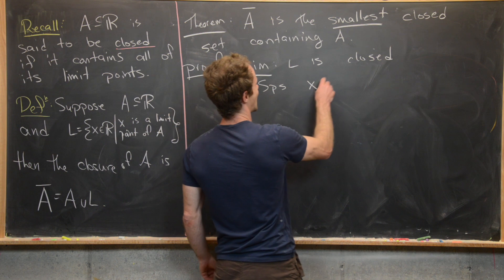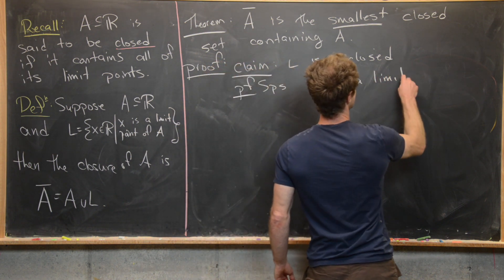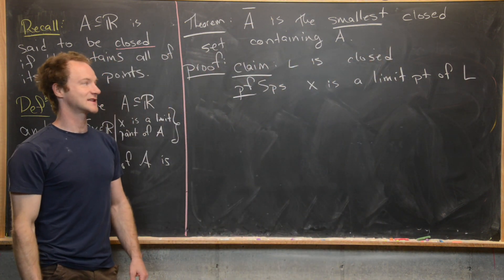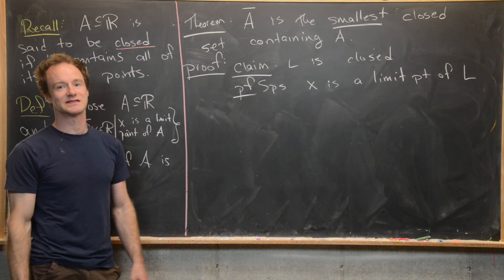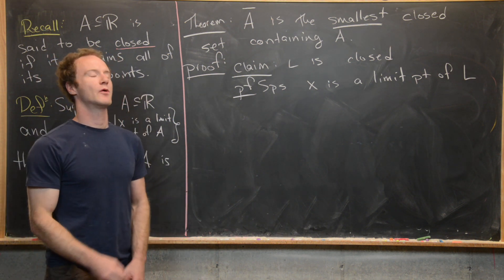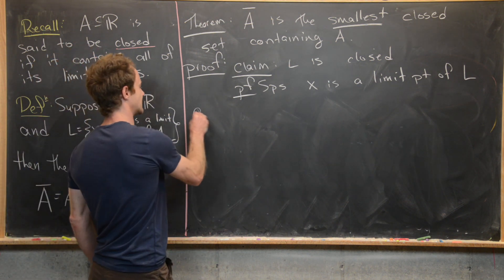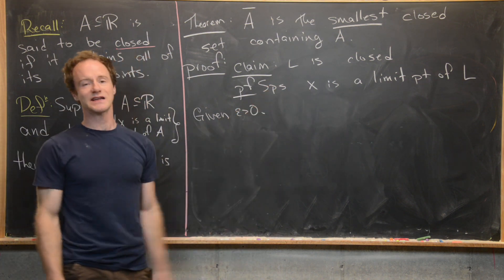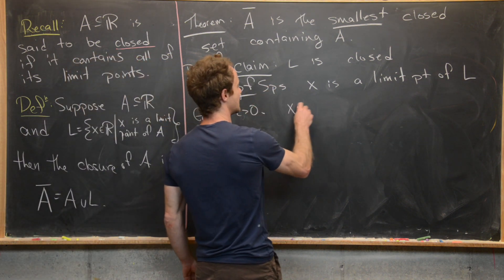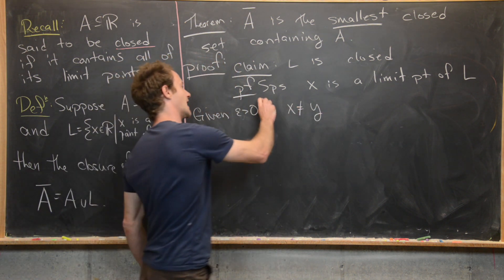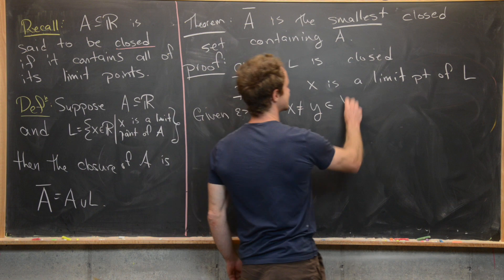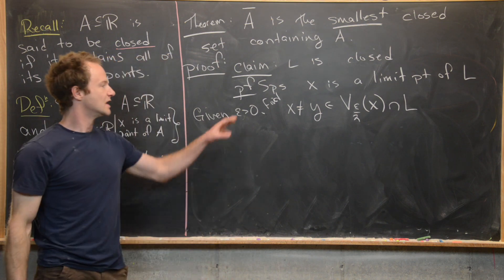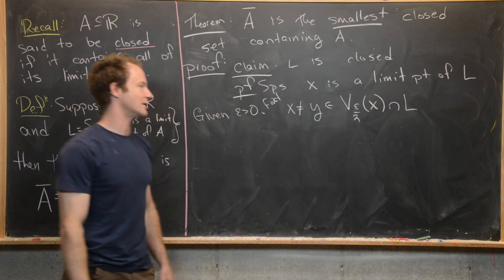Suppose X is a limit point of L. What we want to show is that X is a limit point of A, which is equivalent to being inside of L. Since the definition of a limit point requires an arbitrary epsilon, suppose we're given some epsilon greater than zero. Since X is a limit point of L, we can find some Y which is not equal to X but is inside the epsilon-over-two neighborhood of X intersected with L.